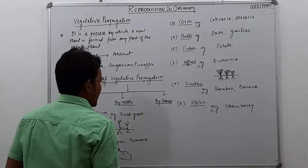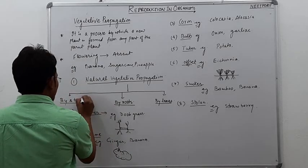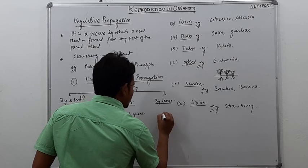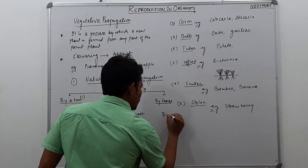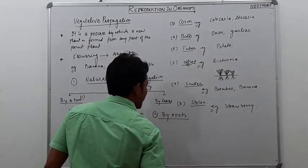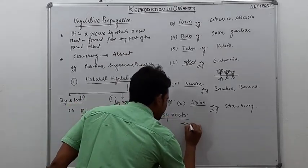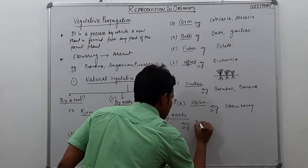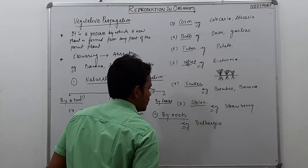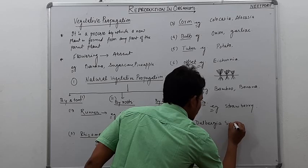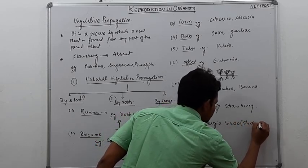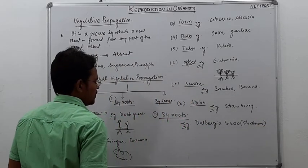Now the next category is the second one, by roots. By roots, the examples are dalbergia and shisham.